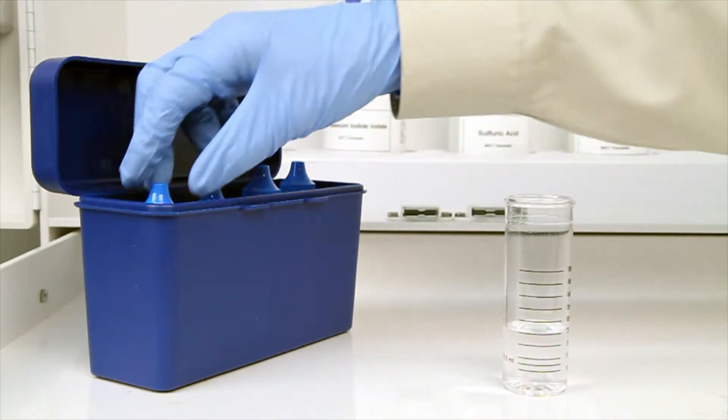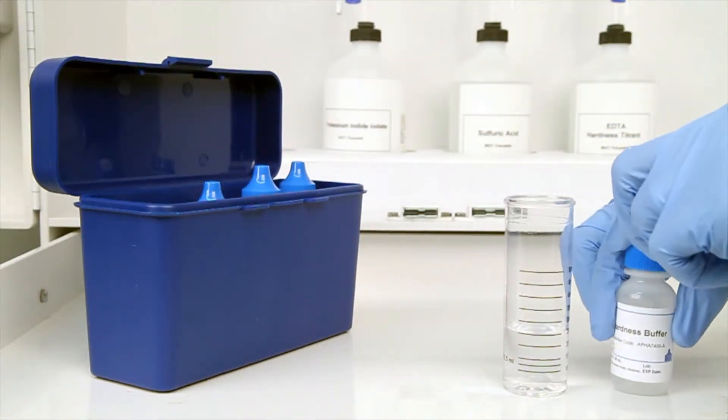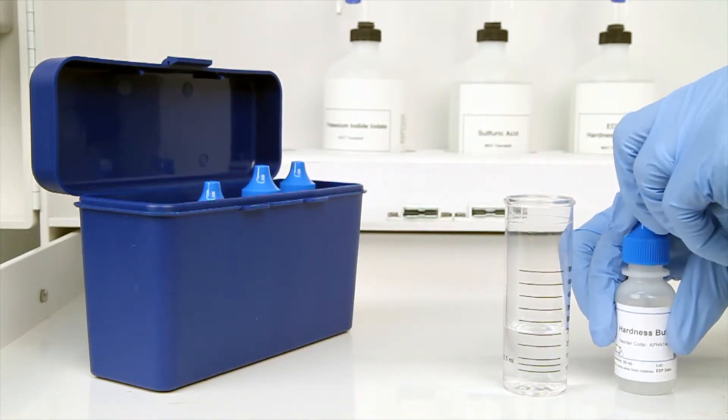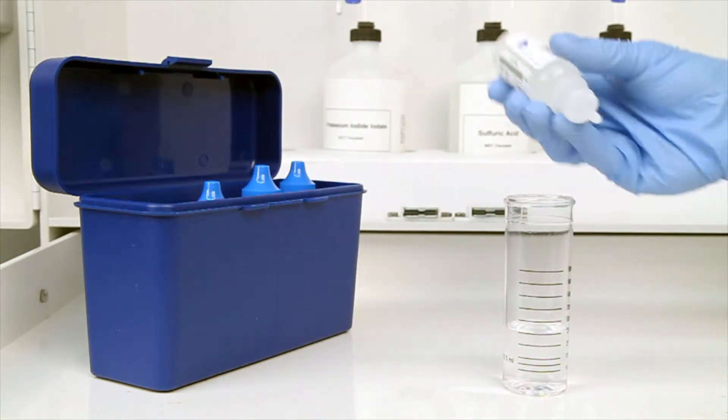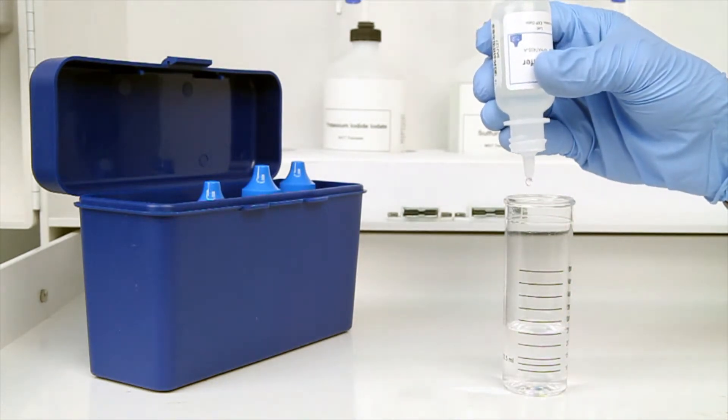The next step according to the Endpoint ID procedure is to add five drops of hardness buffer. Be sure to hold the bottle vertically to get a consistent drop size.